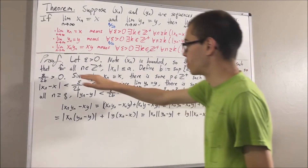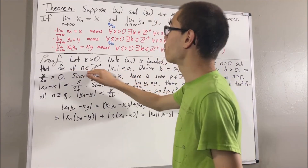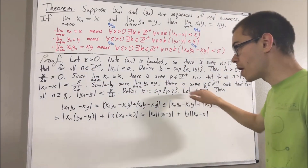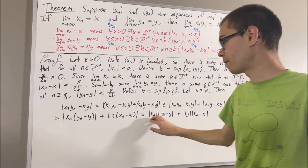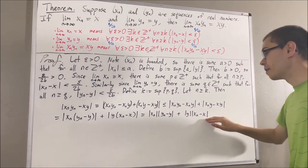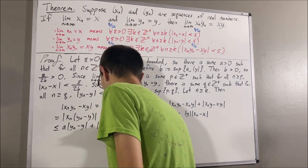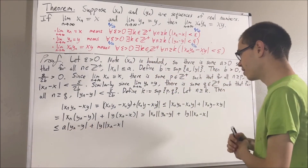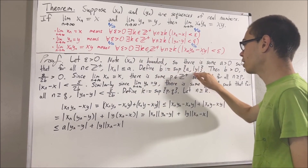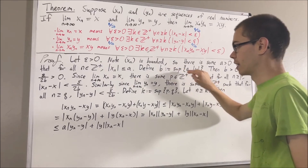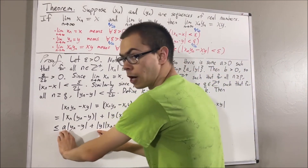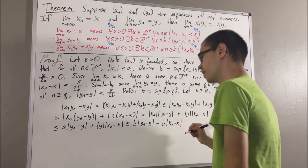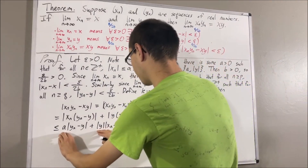Let's recall that this boundedness statement is true, and since it works for every positive integer, it must work for the positive integer n. So the absolute value of xn is less than or equal to a, and because of that, this expression is less than or equal to a times absolute value of yn minus y plus absolute value of y times absolute value of xn minus x. Since b is the bigger of a and the absolute value of y, both a and absolute value of y are less than or equal to b, so this must be less than or equal to b times absolute value of yn minus y plus b times absolute value of xn minus x.